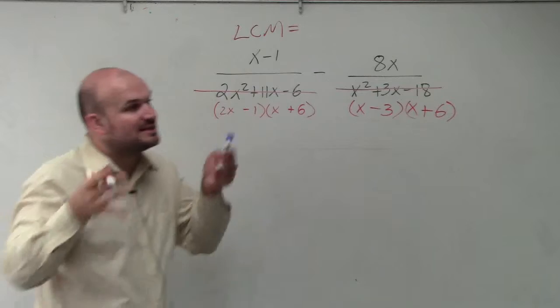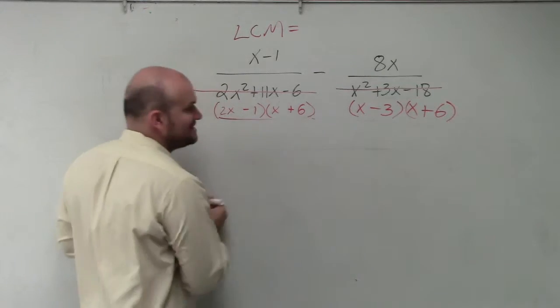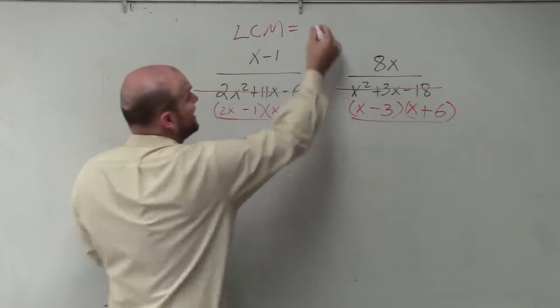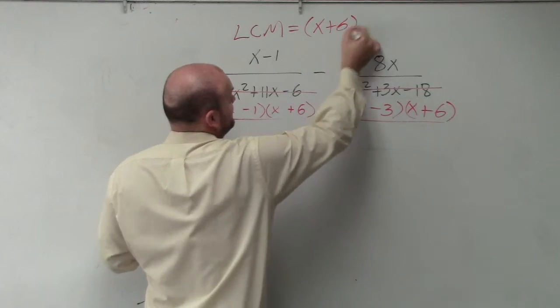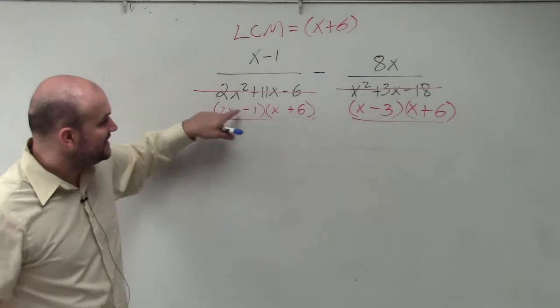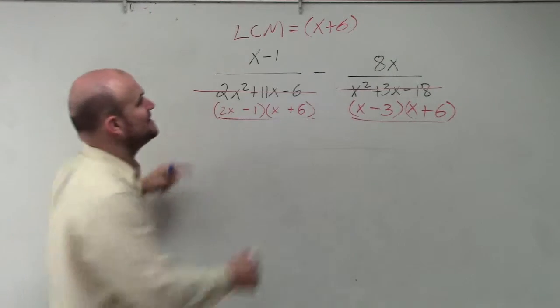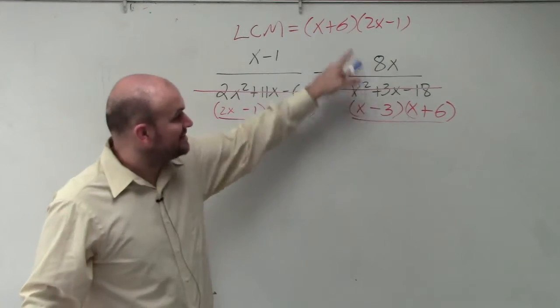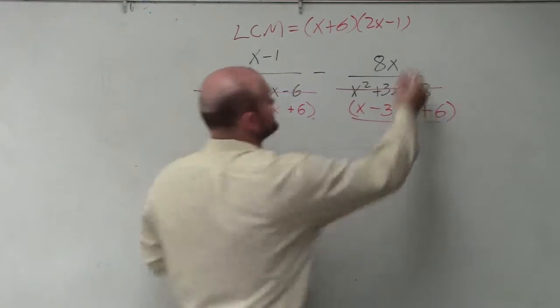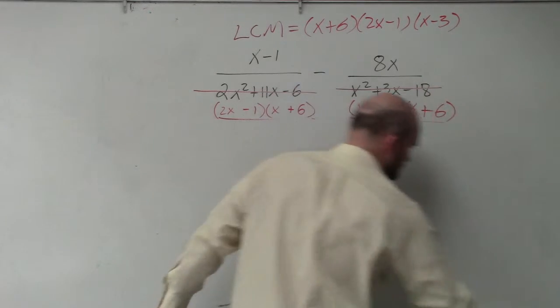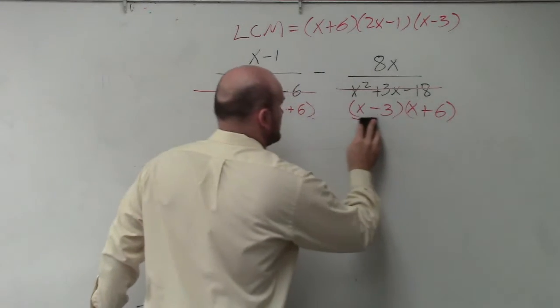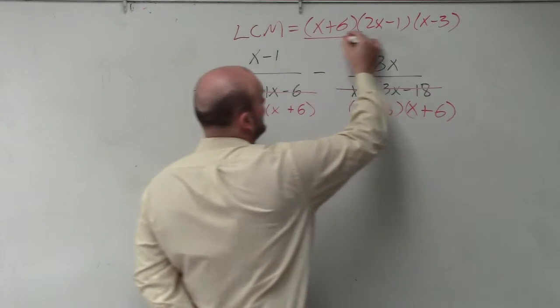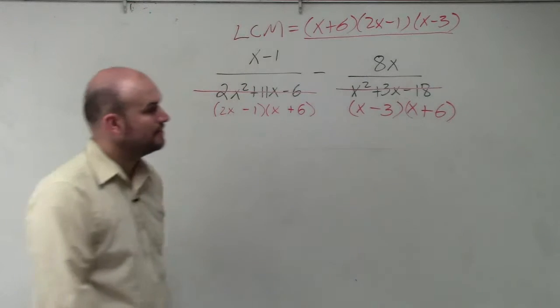So the LCM, remember, is the least common multiple that this divides into and that divides into. So we know that for these both to divide into them, it has to contain an x plus 6, right? Then for this to divide into that, it also has to contain a 2x minus 1. And for this to divide into it, it also has to contain an x minus 3. So this is now my least common multiple, alright?